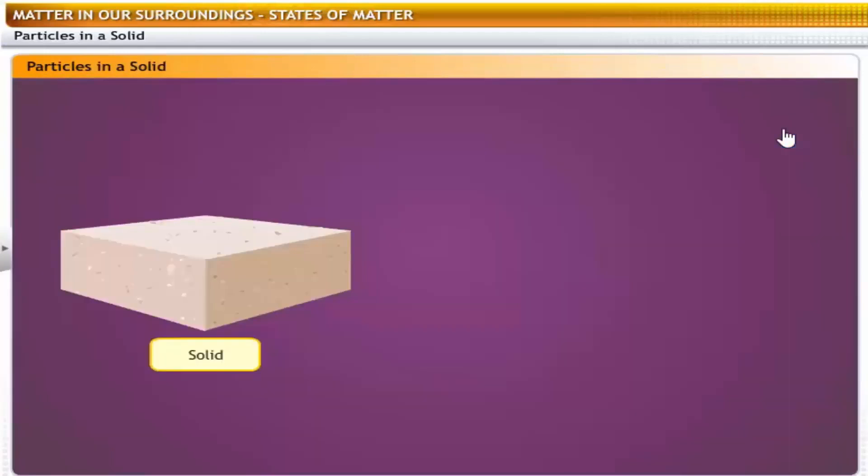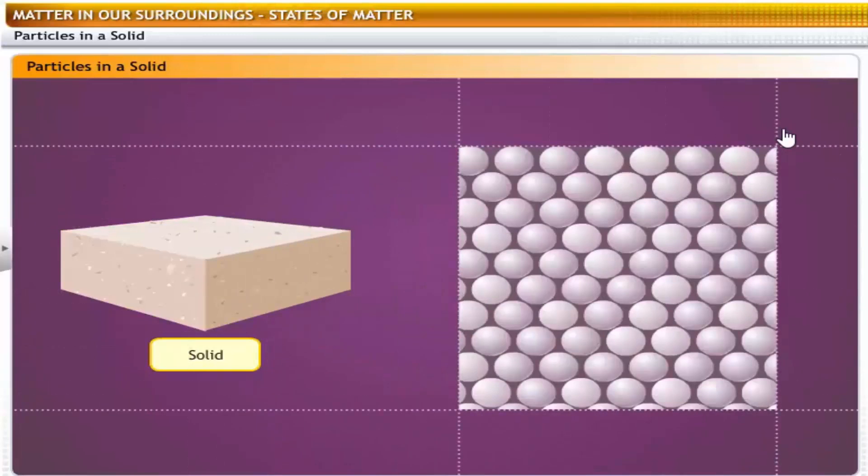When the particles are bound together firmly, as you can see here, they form solids. In solids, the particles simply vibrate about their fixed positions, because their kinetic energy is low and not enough to let them break away from their mutual force of attraction. Therefore, solids have definite shapes and volumes. For the same reason, they do not flow or diffuse.